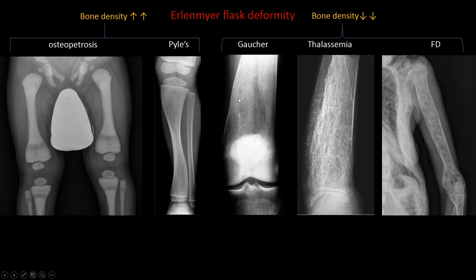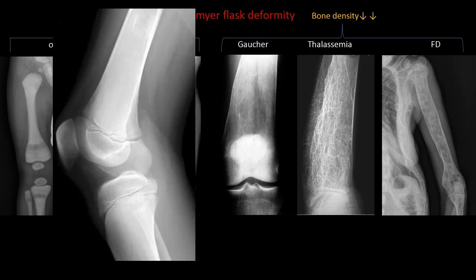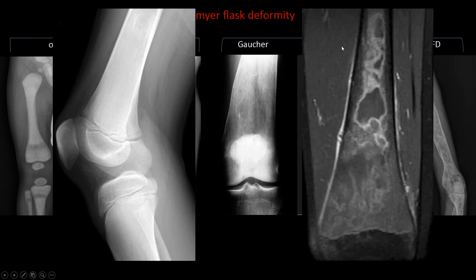In Gaucher disease, look for any avascular necrosis, which can be epiphyseal or medullary. In this case there is diffuse epiphyseal sclerosis indicating medullary avascular necrosis. In another case of Gaucher disease on AP view there is metaphyseal flaring and a subtle area of medullary sclerosis. The same patient's MRI T1 fat-sat after contrast showed serpentine enhancement of infarcted marrow, characteristic of medullary necrosis.